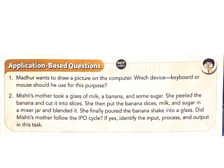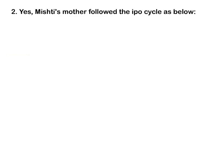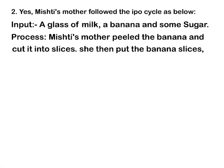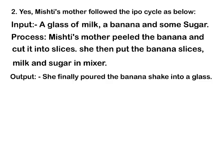2. Misty's mother took a glass of milk, a banana, and some sugar. She peeled the banana and cut it into slices. She then put the banana slices, milk, and sugar in a mixer jar and blended it. She finally poured the banana shake into a glass. Did Misty's mother follow the IPO cycle? If yes, identify the input, process, and output. Answer: Yes, Misty's mother followed the IPO cycle. Input: a glass of milk, a banana, and some sugar. Process: Misty's mother peeled the banana and cut it into slices, then put the banana slices, milk, and sugar in a mixer. Output: She finally poured the banana shake into a glass.